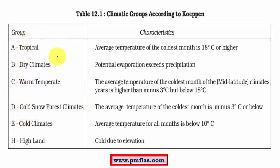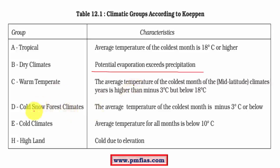Under dry climates there are various kinds like low latitude and high latitude dry climates, where potential evaporation exceeds precipitation — less rain and more evaporation. Temperate climates are classified into various categories; these are the most complex ones because variations are very minute and sometimes confusing. Then we have cold snow forest climates associated with regions around the Arctic and Antarctic circles, extremely cold climates, and highland climates like those of the Himalayas.